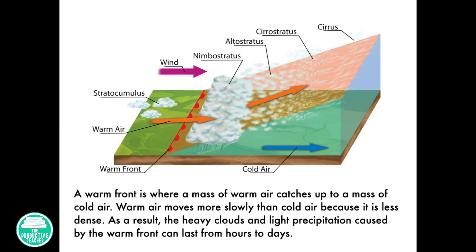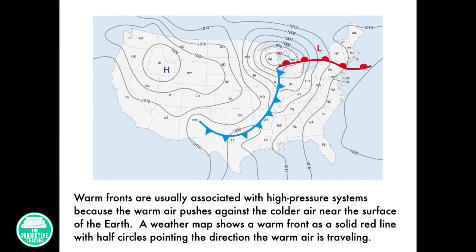A warm front is where a mass of warm air catches up to a mass of cold air. Warm air moves more slowly than cold air because it is less dense. As a result, the heavy clouds and light precipitation caused by the warm front can last from hours to days. Warm fronts are usually associated with high pressure systems because the warm air pushes against the colder air near the surface of the earth. A weather map shows a warm front as a solid red line with half circles pointing the direction the warm air is traveling.